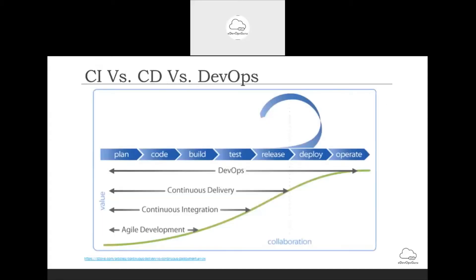From the perspective of the complete SDLC lifecycle, CI, CD and DevOps each fit in. First is agile development — you plan it, code it, and build it. Then comes continuous integration, which automates everything once you have done the coding: how to automate building your binaries and how to automate testing them. Next is continuous delivery, which is one step ahead — how would you deliver your binaries for a release that will be deployed to the production environment.